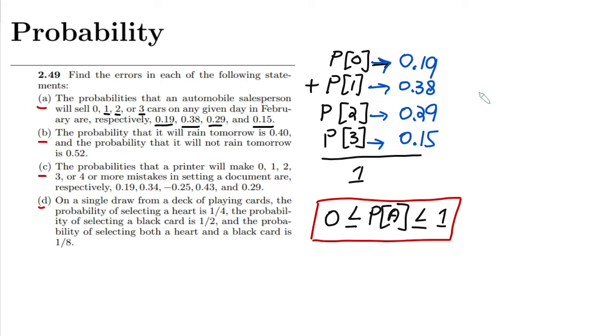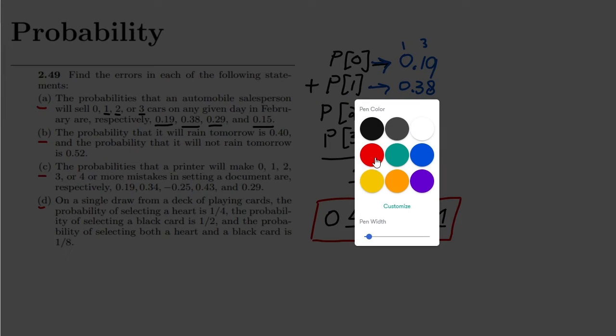Let me add them, so 9 plus 8 is 17, 17 plus 9 is 26, 26 plus 5 is 31. This would be 1.01.